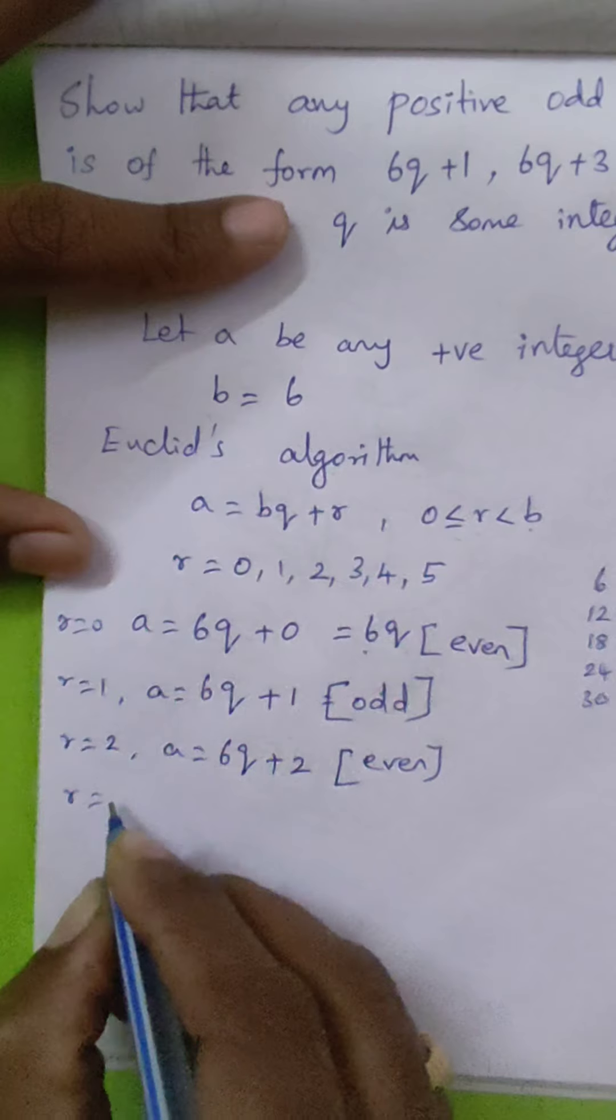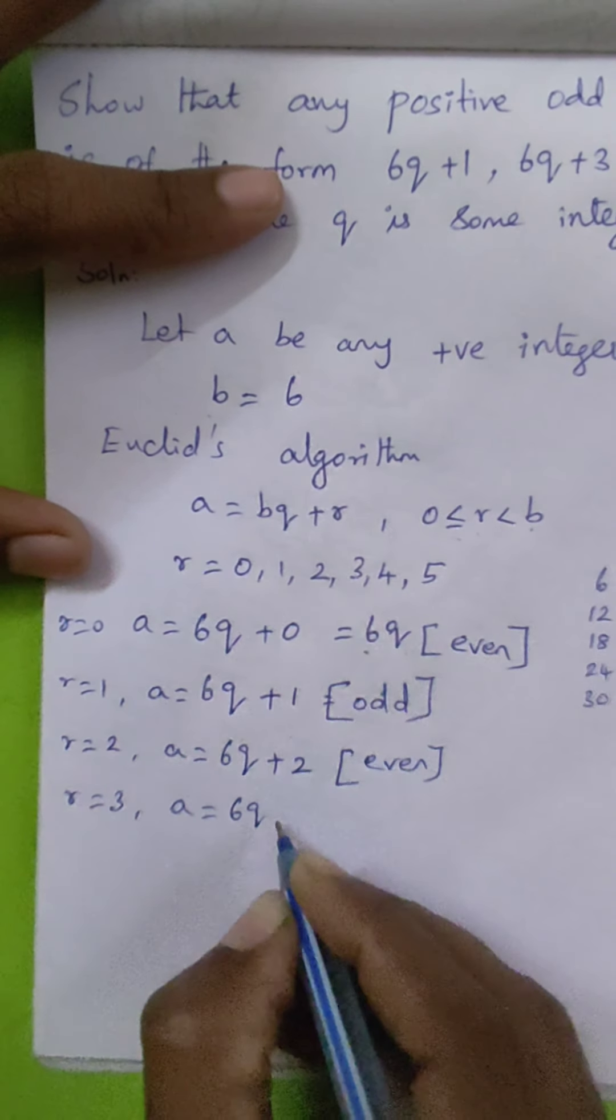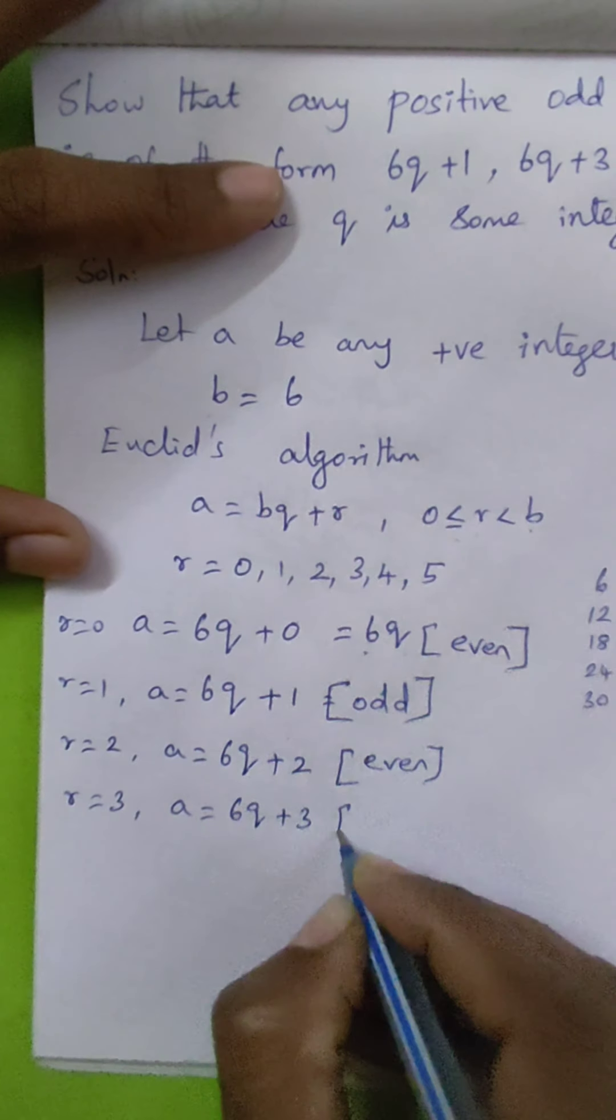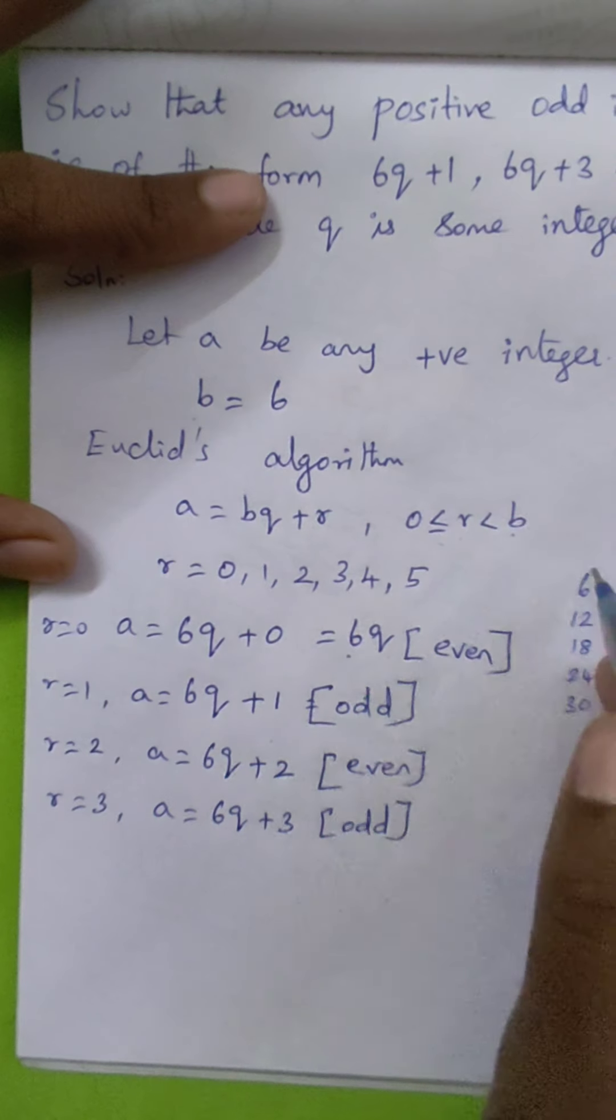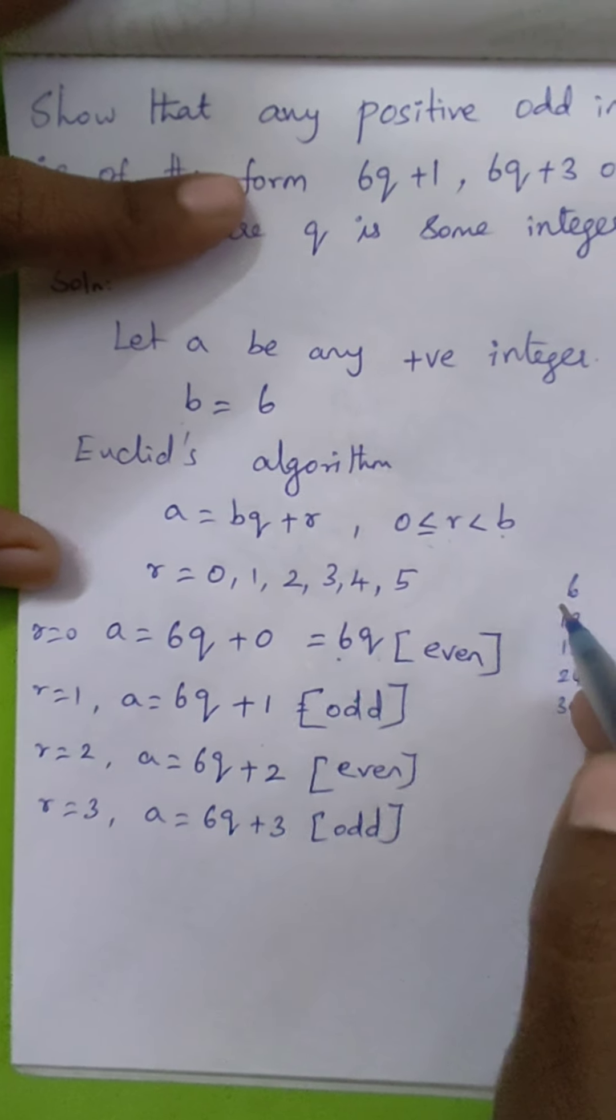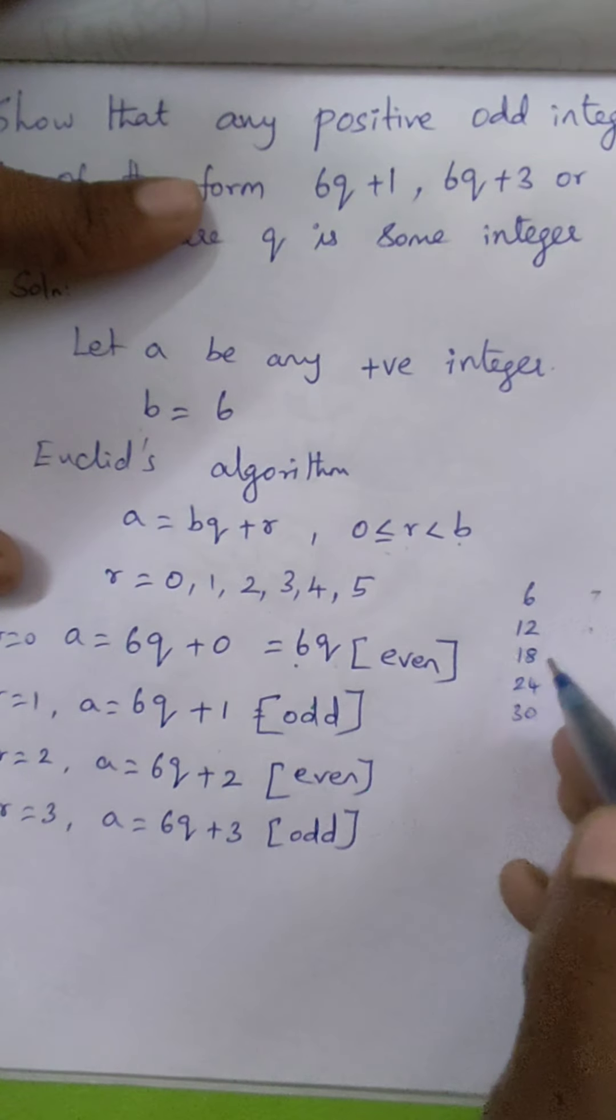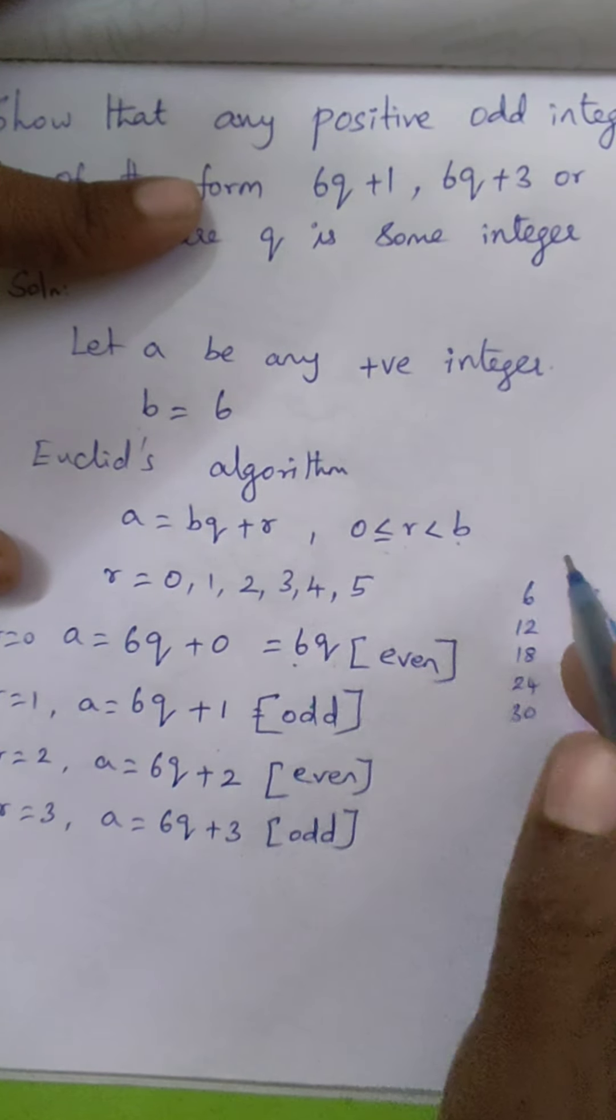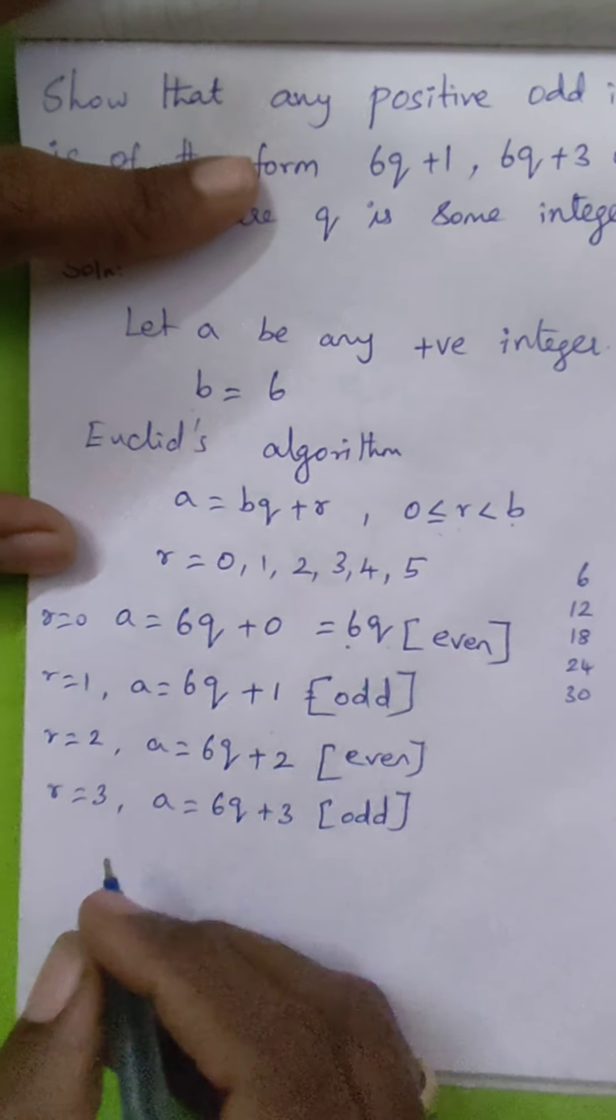We move to r equals 3, so a equals 6q plus 3. This gives odd values. Why? Because adding 3 to multiples of 6, we get 9, 15, 21. All those values are odd, so 6q plus 3 is odd.